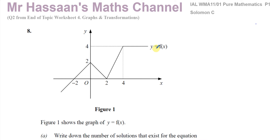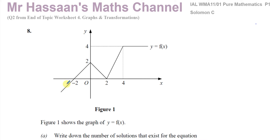We're told that figure 1 shows the graph of y equals f of x. This is a piecewise function — it changes for different values of x. When x is less than 0, it looks like y equals x plus 2. Between 0 and 2, it looks like y equals minus x plus 2. Then it changes to a line with a gradient of 2, and then it changes to y equals 4. So the function changes its behavior for different domains of x — that's why it's called a piecewise function.